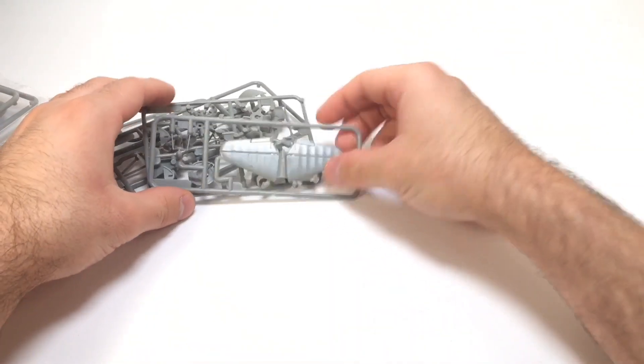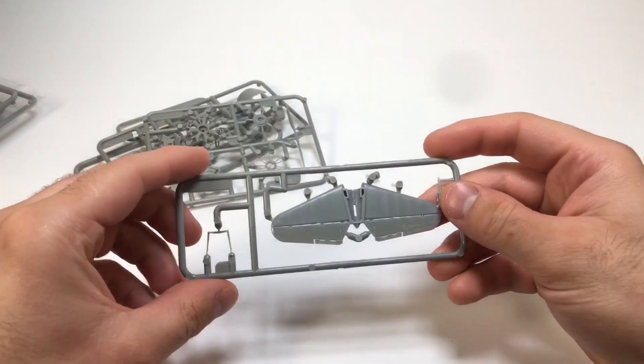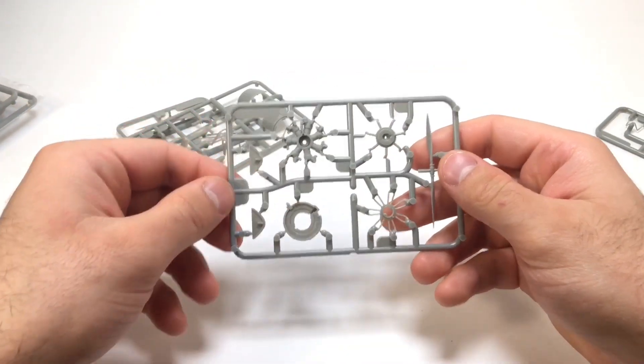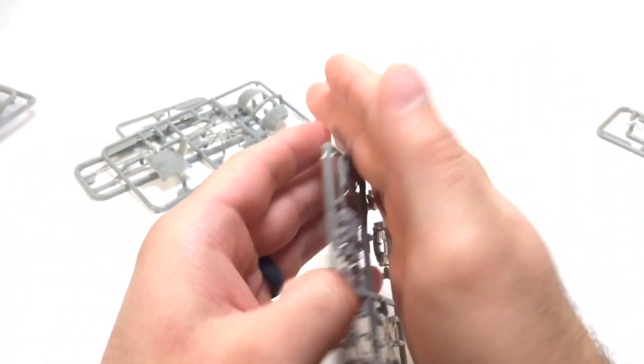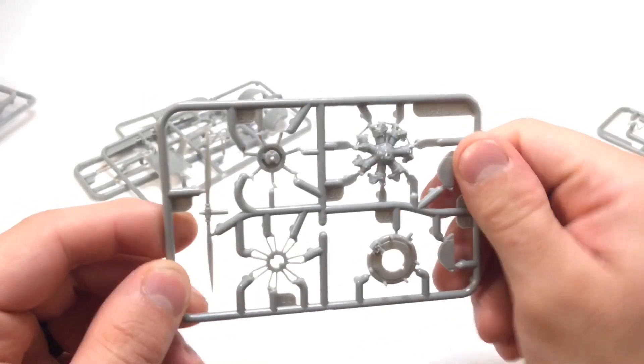All right, we've got the first package open. Looks to be the stabilizer. I'm sorry if I get some of these parts wrong, I'm not really familiar with airplanes. We got the engine, very detailed. All these parts are very detailed. They're really great with the plastic, sturdy, not flimsy.